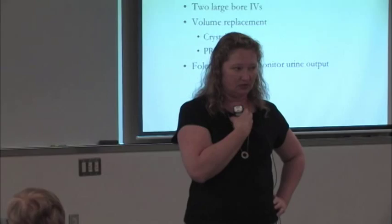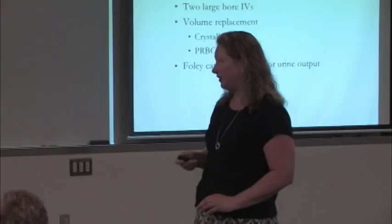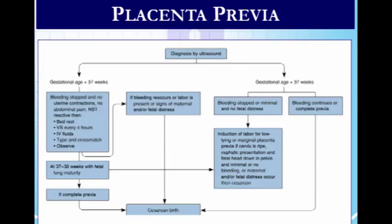The goal for urine output is 30 cc/hour minimum, or a weight-based goal of 0.5 to 1 cc per kilogram. For placenta previa, these moms will have painless bright red bleeding. The abdominal exam is usually benign, but we don't want to introduce anything into the vaginal vault because we may cause further rupturing or tearing of the placenta.